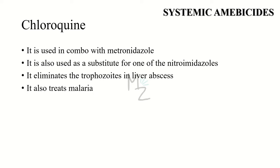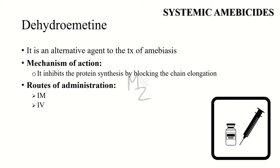Now let's talk about the systemic amebicides. The first one is chloroquine. It is used in combination with metronidazole or as a substitute for one of the nitroimidazoles in the case of intolerance to treat amoebic liver abscesses. It eliminates trophozoites in liver abscesses but is not useful in treating luminal amebiasis; therapy should be followed with a luminal amebicide. Chloroquine is also effective against malaria.